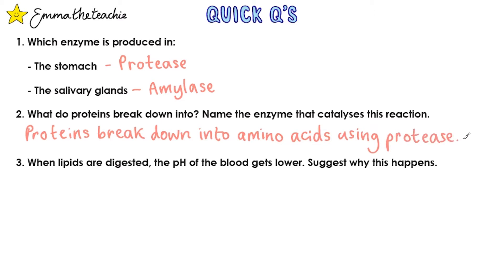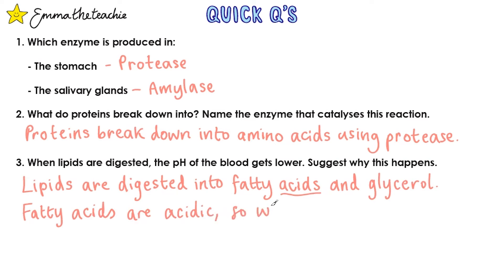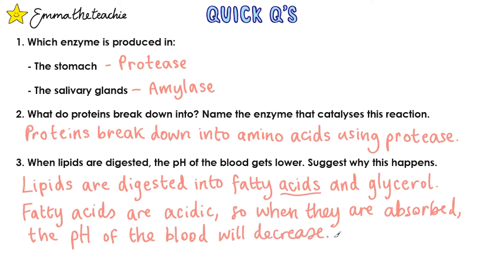Number three: when lipids are digested the pH of the blood gets lower — suggest why this happens. For a suggest question you need to use general knowledge and apply it to the situation. Lipids are digested into fatty acids and glycerol. The key word there is acids — fatty acids are of course acidic. So when they are absorbed into the bloodstream, the pH of the blood will decrease, making it lower. Do be prepared for this question to come up, perhaps as a graph question — examiners love this question.